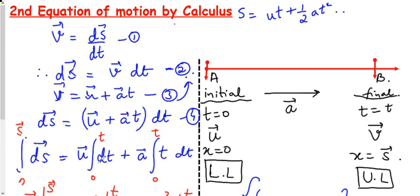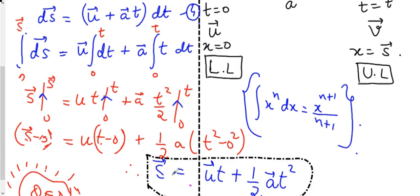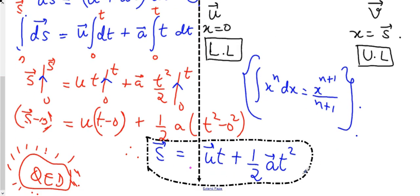We have derived the second equation of motion. Step 1: velocity is rate of change of displacement, cross multiply. Step 2: substitute the first equation v = u + at. Step 3: integrate between respective limits using integration rules. Please pause and note the second equation of motion in your copy along with the words.